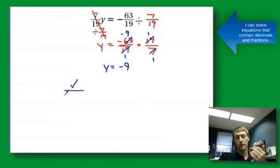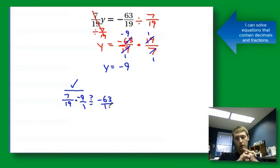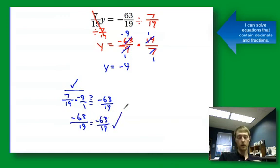If I plug this back in in my check step, 7/19, I know I'm multiplying fractions, so I'm just going to go ahead and make -9, -9/1, so that I can just multiply those out. Remember multiplication, you don't need common denominators. It's just do it. So 7 times -9 is -63 over 19. It checks out. There's your solution.